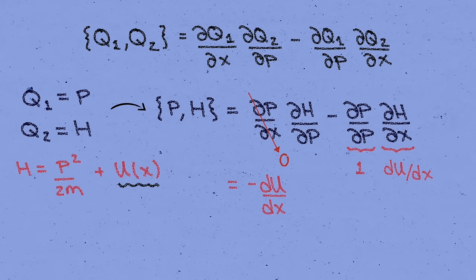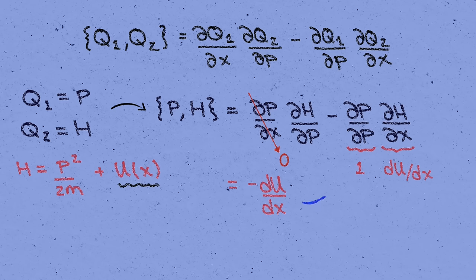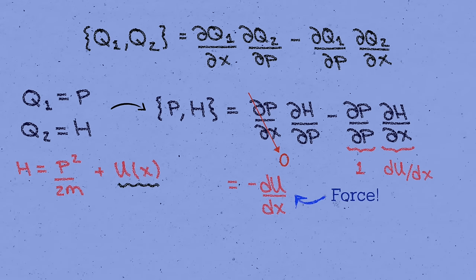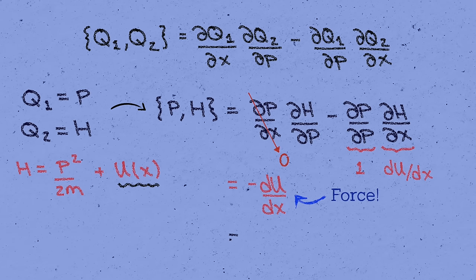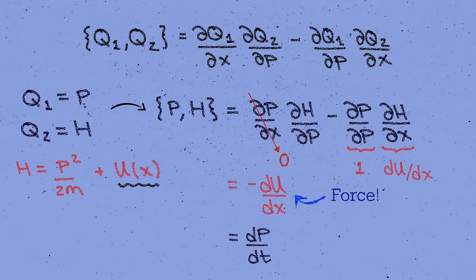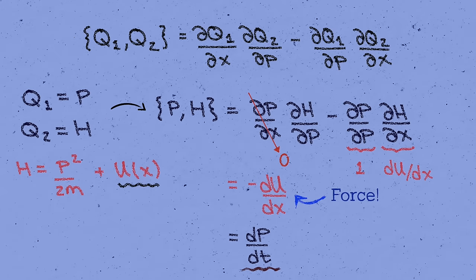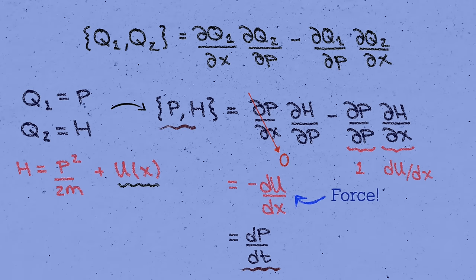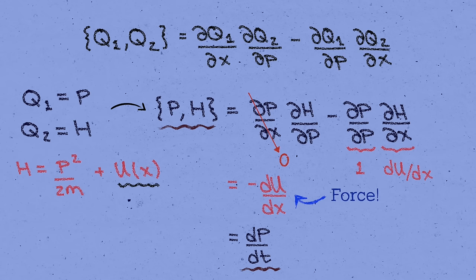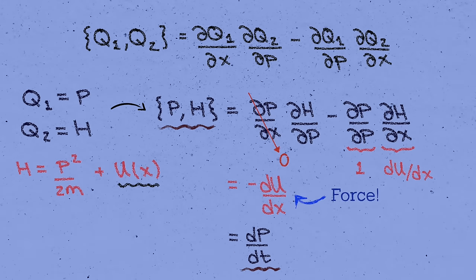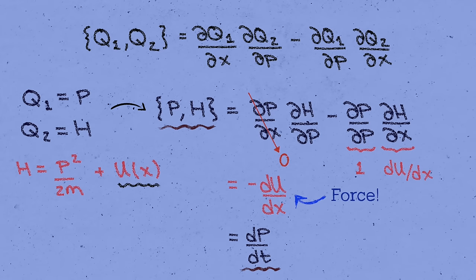But we can write this more suggestively, by remembering that that's just equal to the force on the particle, and by Newton's second law, the force equals the rate of change of the momentum, dp by dt. Therefore, we learn that we can rewrite Newton's second law as the statement that the rate of change of the momentum p is equal to its Poisson bracket with the Hamiltonian h. That's a cute way of rewriting f equals ma, so maybe we're onto something here. Or maybe it's just a fluke. Let's check another example.